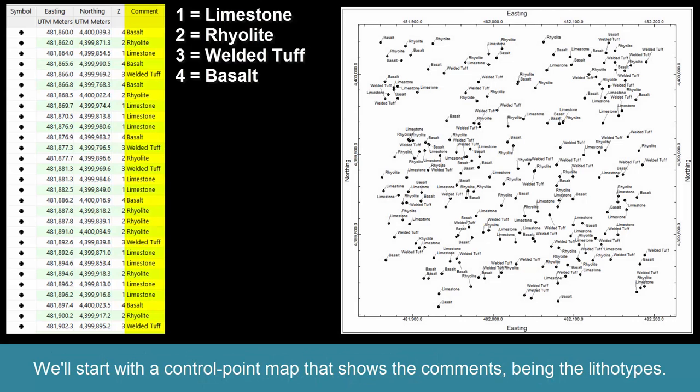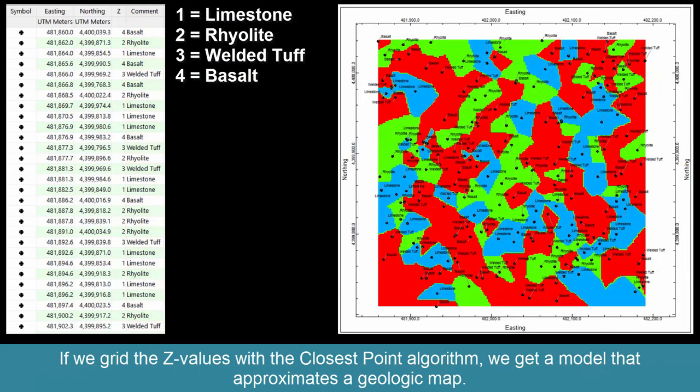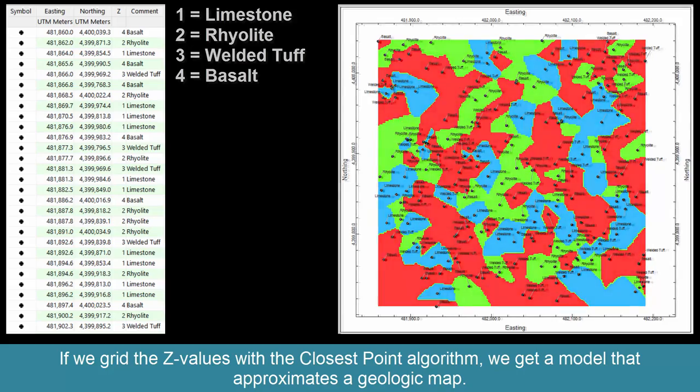We'll start with a control point map that shows the comments being the lithotypes. If we grid the Z values with the closest point algorithm, we get a model that approximates a geologic map.